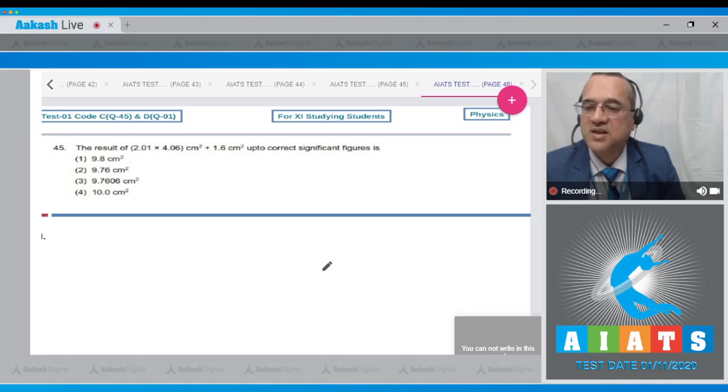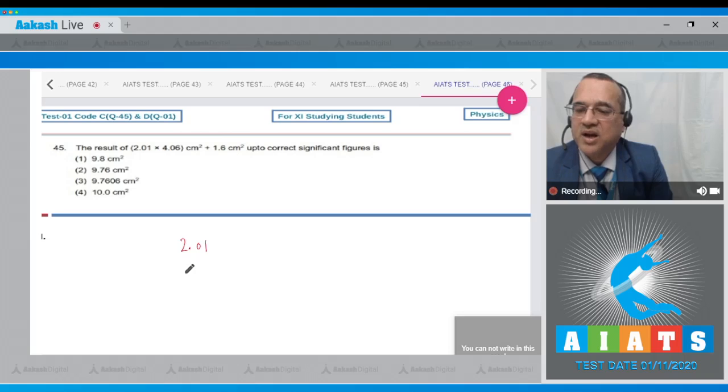Question number 45 says: the result of 2.01 multiplied by 4.06 cm² plus 1.6 cm² up to correct significant figures is. First option is 9.8 cm², second is 9.76 cm², third is 9.7606 cm², last option is 10.0 cm². Let us multiply 2.01 and 4.06. This would be equal to 8.16. Others you have to drop because you have to take and multiply only three significant figures. To this you have to add 1.6.